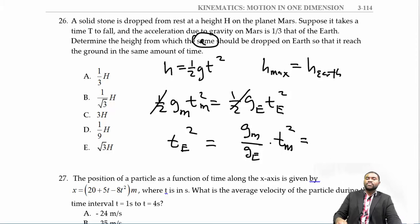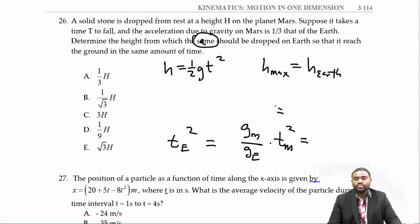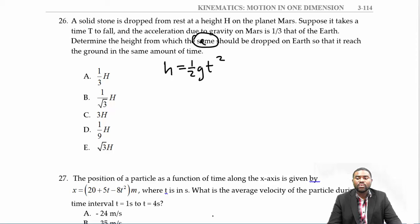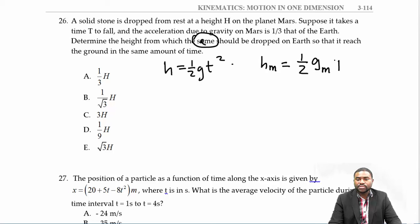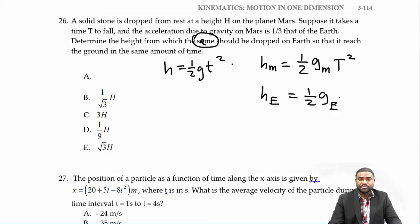We need to determine the height, not the time. So h_Mars = ½g_Mars·T² and h_Earth = ½g_Earth·T², where the time T is the same. The question is: what is h_Earth so that the time is the same?